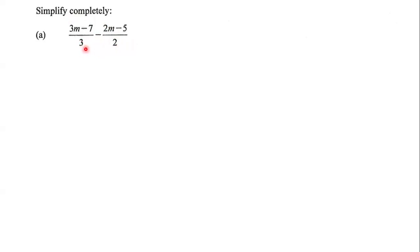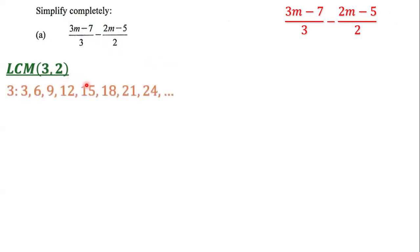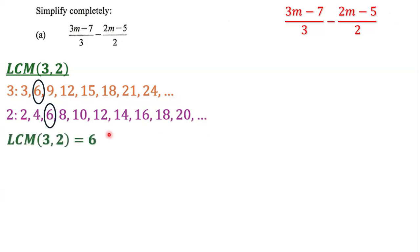We're going to find the LCM of 3 and 2, the lowest common multiple. Let's list the multiples of 3: 3, 6, 9, 12, 15, 18, 21, 24, and so on. The multiples of 2 are 2, 4, 6, 8, 10, 12, 14, 16, 18, 20, and so on. That means the lowest common multiple of 3 and 2 is 6.